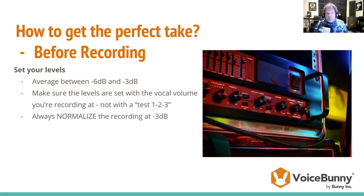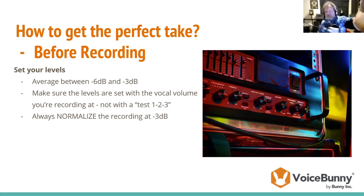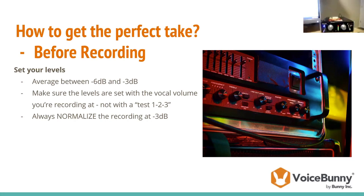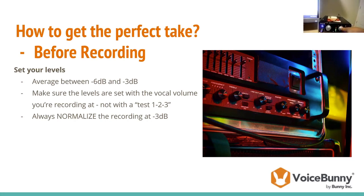That's 50% of it — 50% is the quality of the read, and the other half is the technical aspects. You want to make sure everything is consistent and your levels are consistent. I always shoot for levels between -6 dB and -3 dB. The way to set those levels is not by looking at numbers on knobs. For example, on my preamp there are numbers, but that has nothing to do with what my levels are actually going to be.